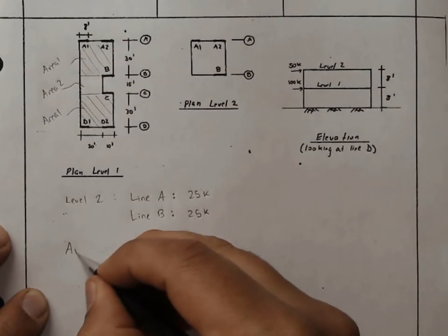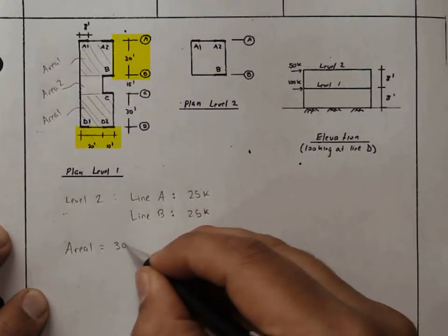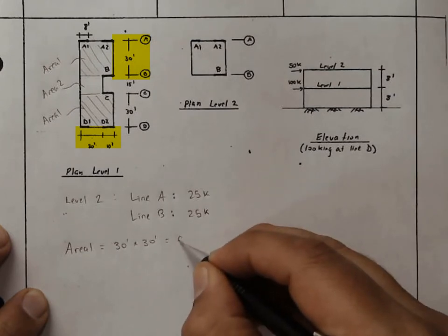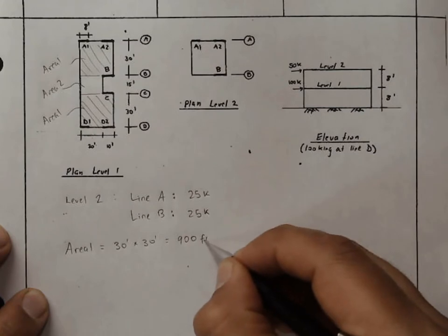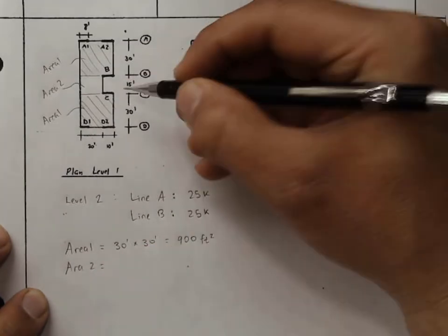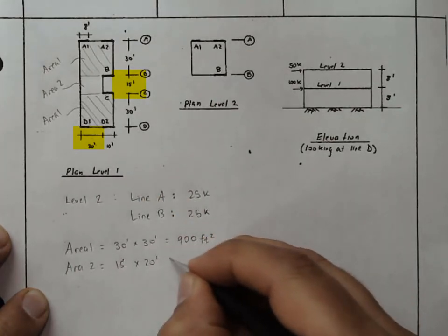Let's calculate the values of those areas. Area 1 is equal to 30 feet times 30 feet, or 900 square feet. Area 2 is equal to 15 feet right here, times 20 feet. 15 feet times 20 feet, which is 300 square feet.